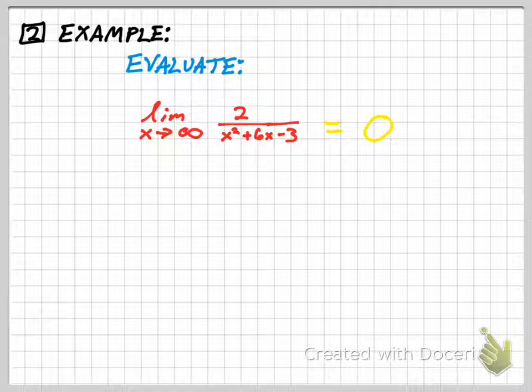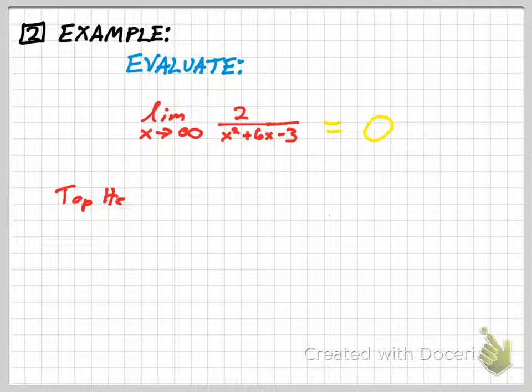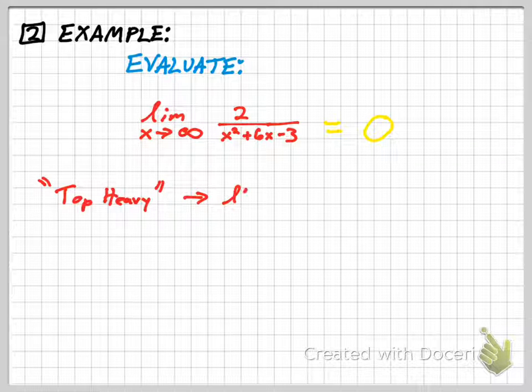Alright, so a good summary is to remember that if you have a rational function that's top-heavy, that the limit will not exist.